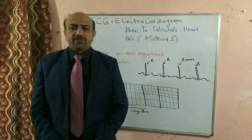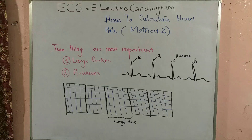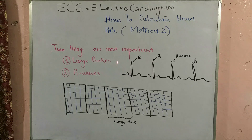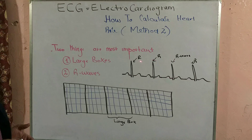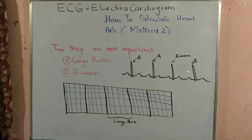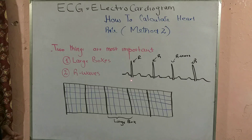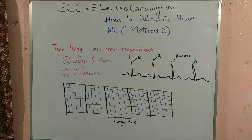Method 2 of the calculation of the heart rate is related to two important things. The first is to know what the R wave is — it is the tallest positive deflection in the QRS complexes, and it represents ventricular depolarization.